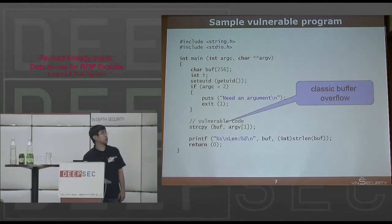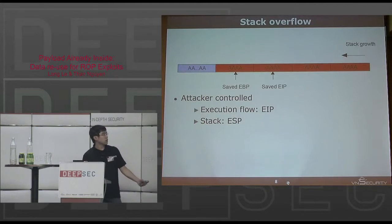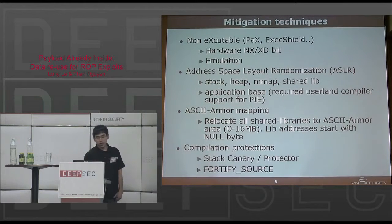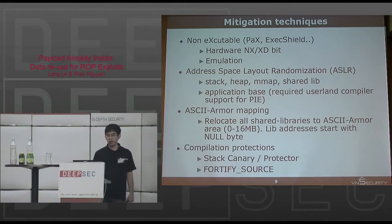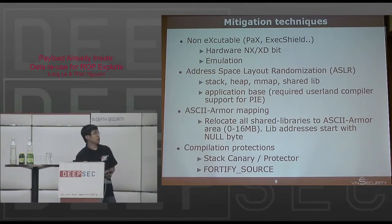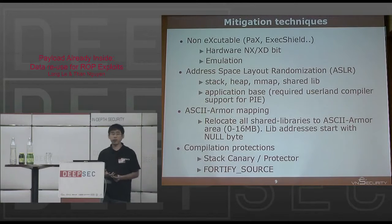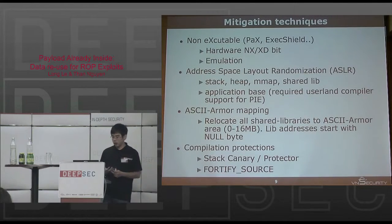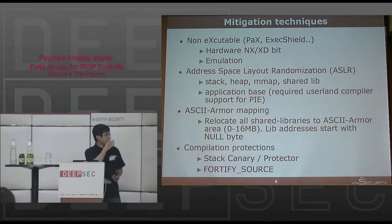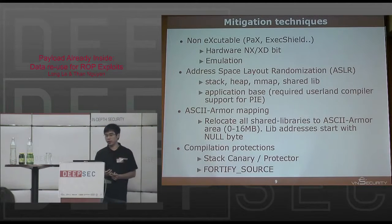I will try to go very fast here because it's just a recap of basic things. This is just the basic buffer overflow problem. Nowadays Linux has a lot of different mitigation techniques — like non-executable, PaX or SELinux, with support from the hardware CPU with NX or XD bit, or by software emulation. There is address space layout randomization, ASLR, which supports randomized mapping of the stack, heap, memory mapping, and shared libraries. The application base also requires compiler support with the PIE flag. And there is SELinux from Red Hat.